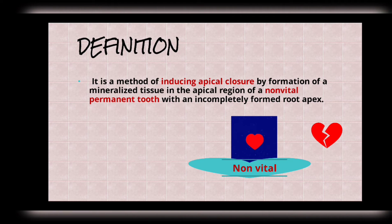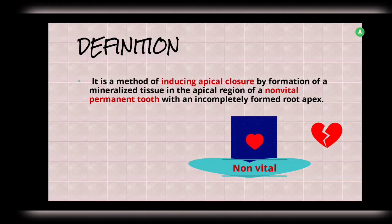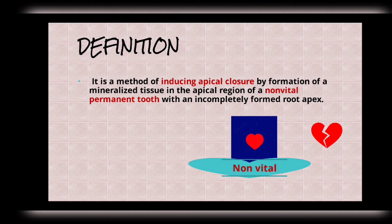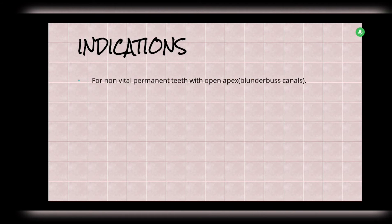In apexification, we have to induce root development — there is no physiological or natural process, meaning the tooth itself cannot perform root growth, and it is done in non-vital teeth. In this procedure, we create a barrier at the open apex by filling the canals with materials. Indications include non-vital permanent teeth with open apex, that is, blunderbuss canals — in such cases we cannot do RCT directly because of the open apex.